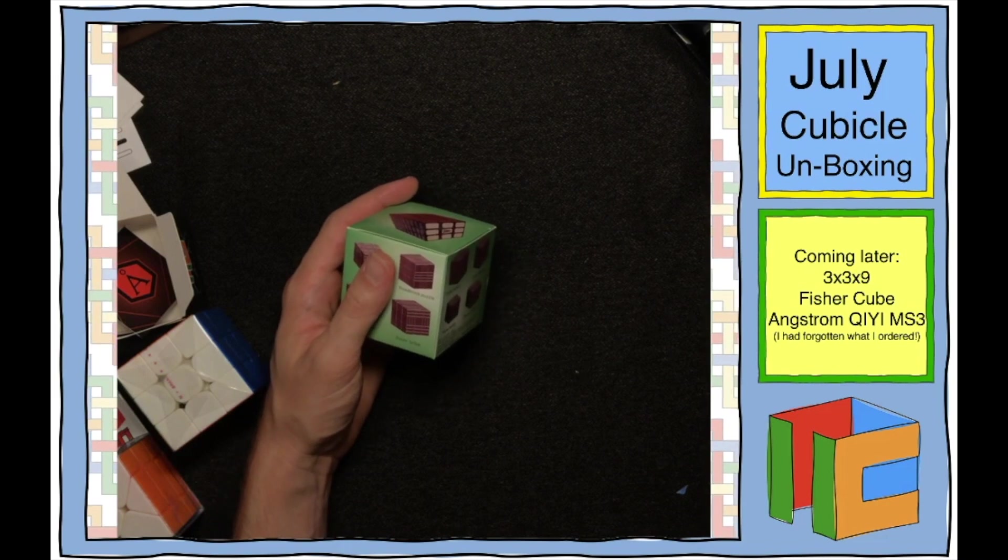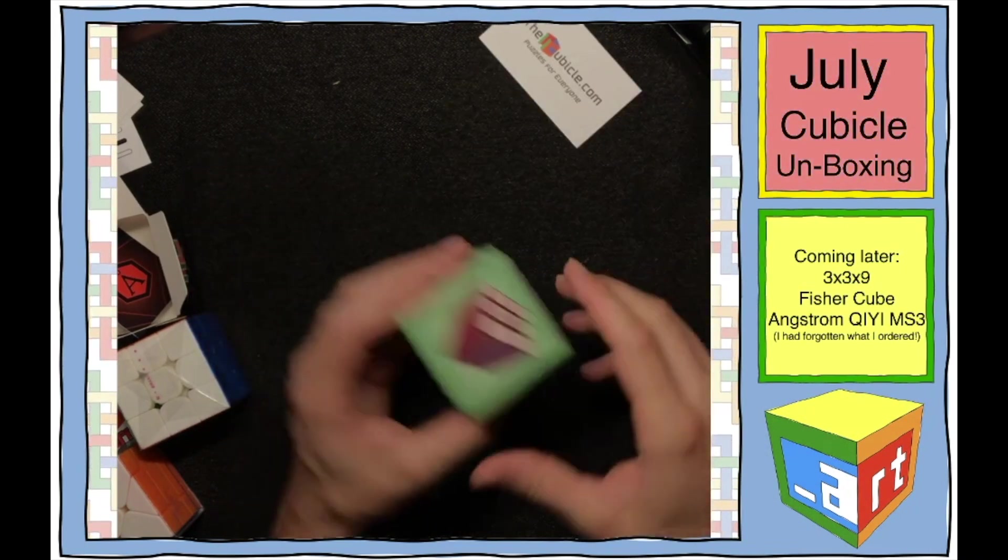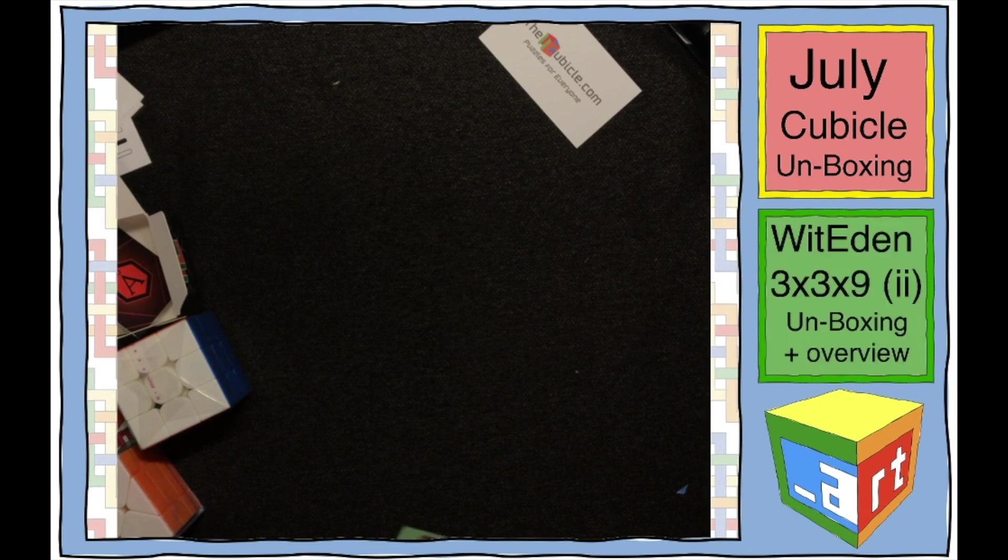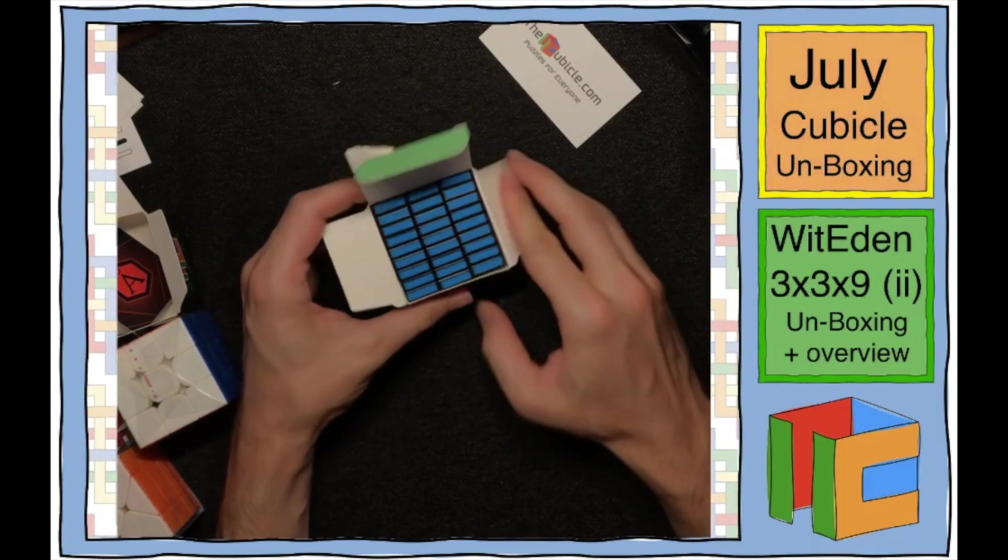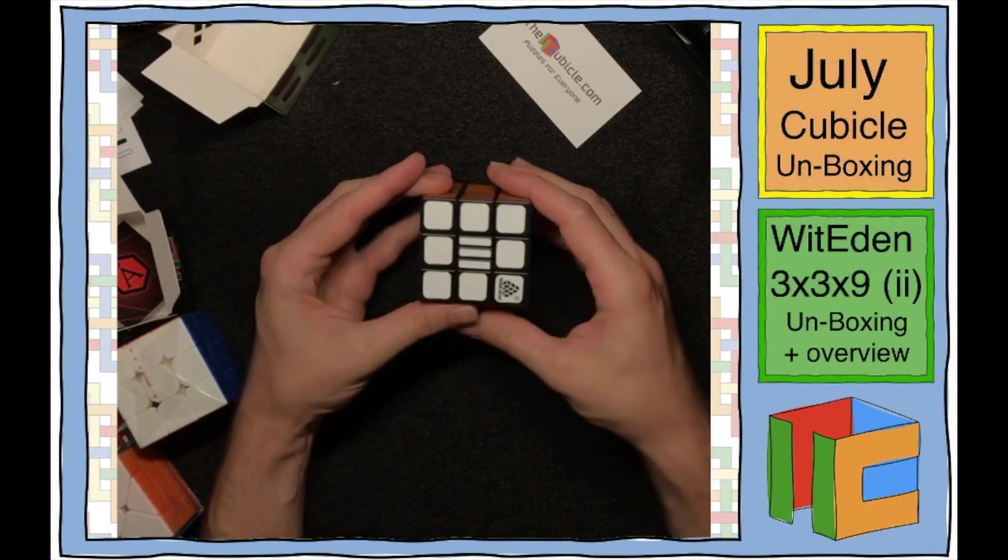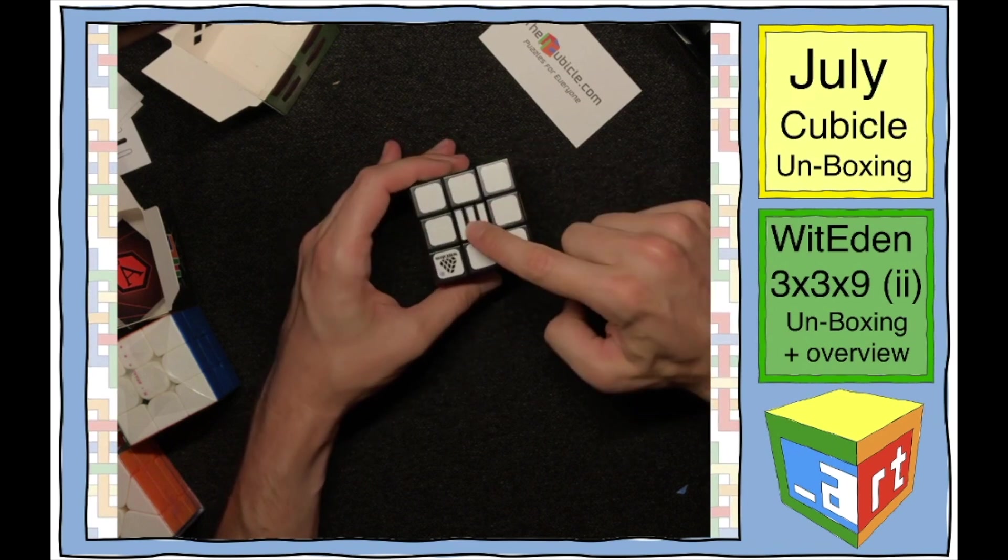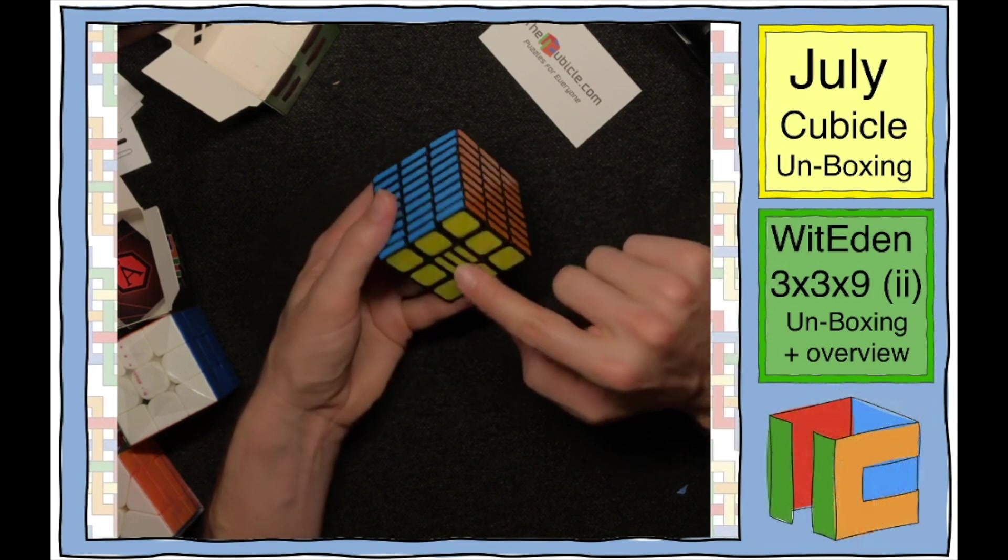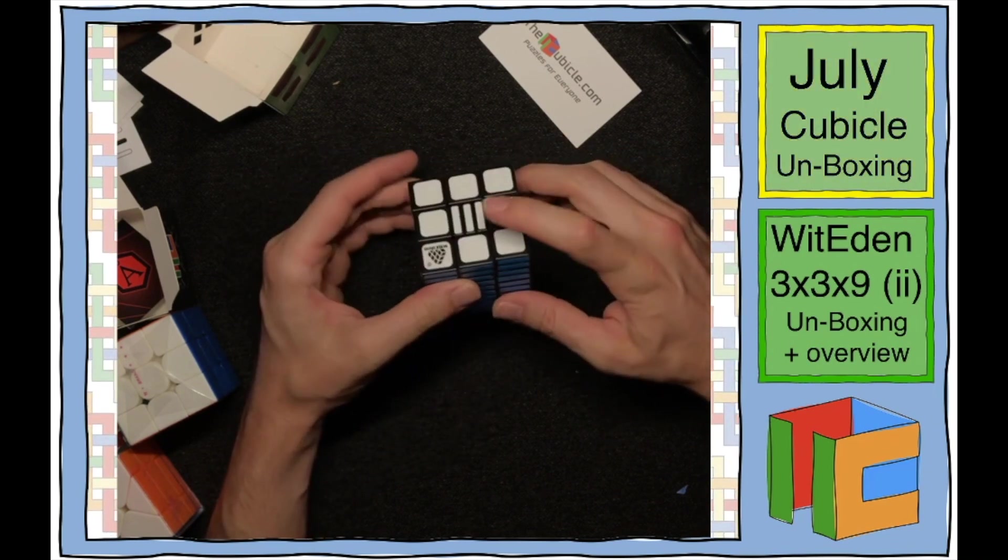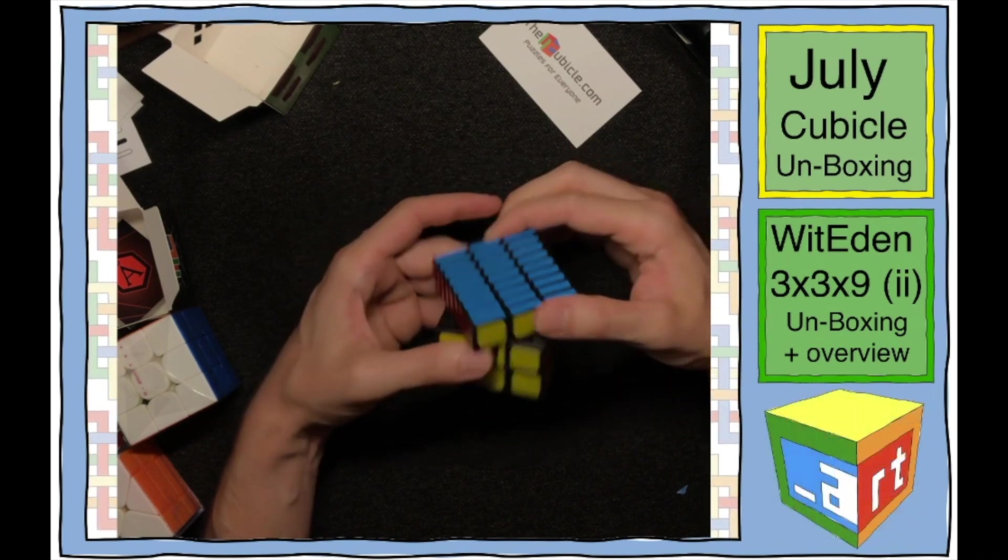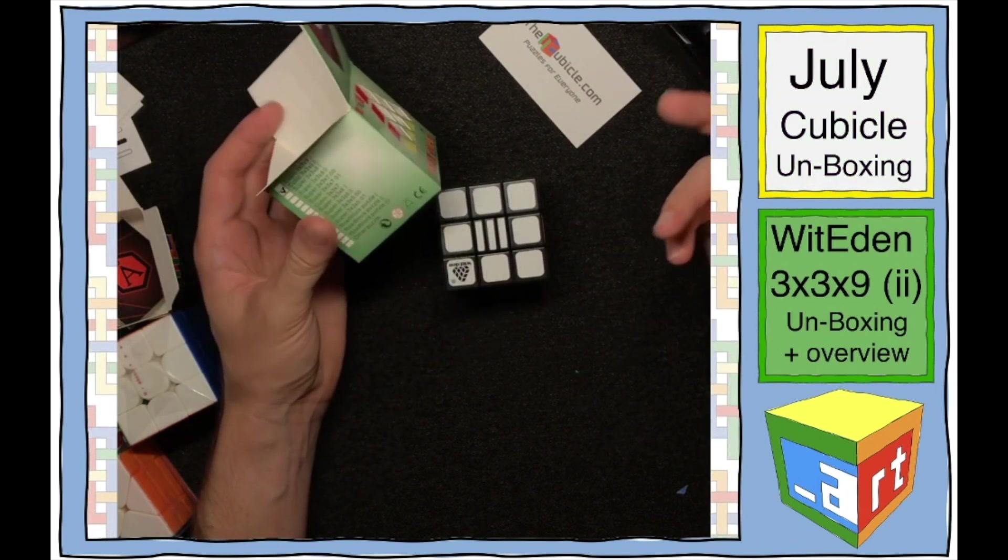That's all that's in the box except, of course, the cubicle card. Puzzles for everyone. Great slogan. Because everyone deserves puzzles. Let's see this bad boy. So this is the WitEden 3x3x9 part two. I think the difference between the one and the two is that the center caps on white and yellow on the first version are solid, one piece, and then here there are three pieces. And I recently saw one where there were more. I think they've made a version three now.